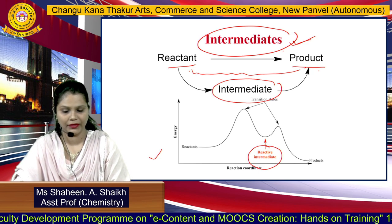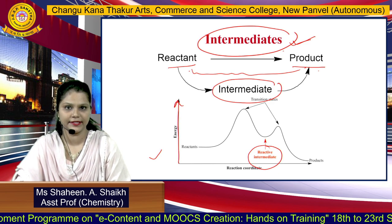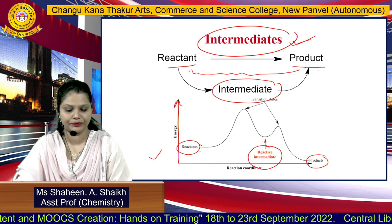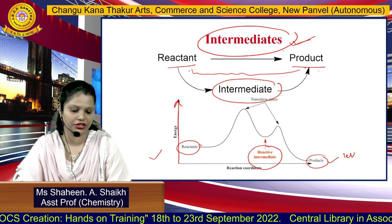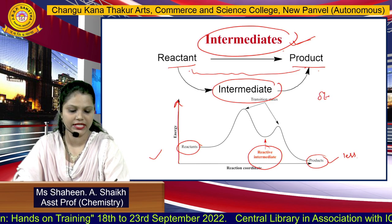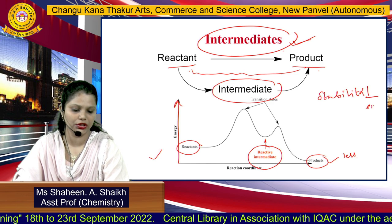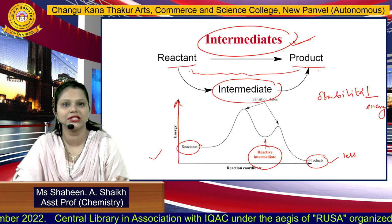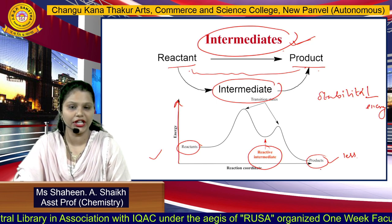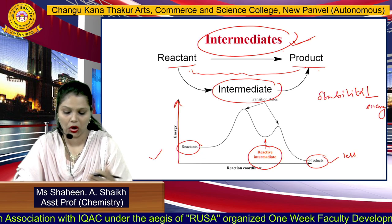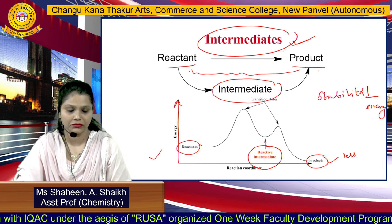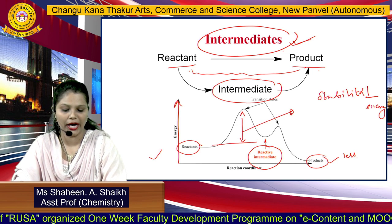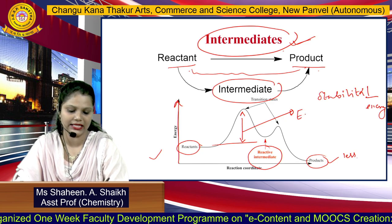When you observe an energy diagram, the energy level is on the y-axis; this is the reactant and this is the product. Why is the reactant converted into a product? Because the product has less energy. Always remember: stability is inversely proportional to energy. If a molecule has high energy, it is unstable. The reactant is converted into a product due to stability. During this conversion, we have to provide a certain amount of energy — that energy required to convert reactant into product is known as activation energy.